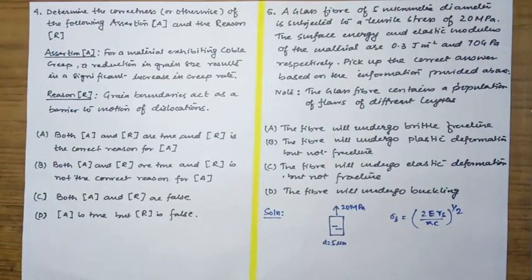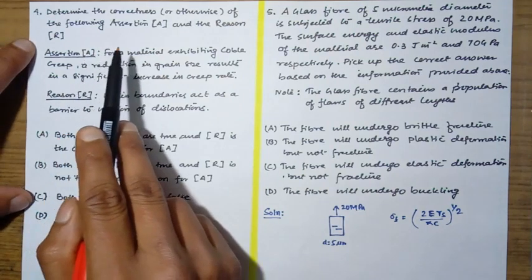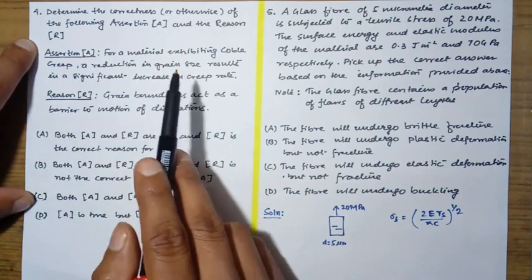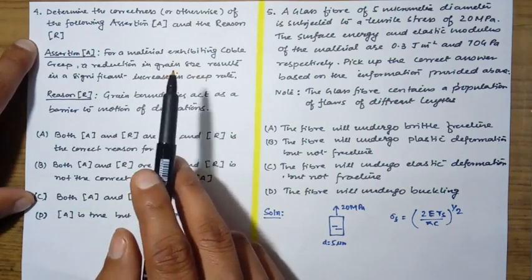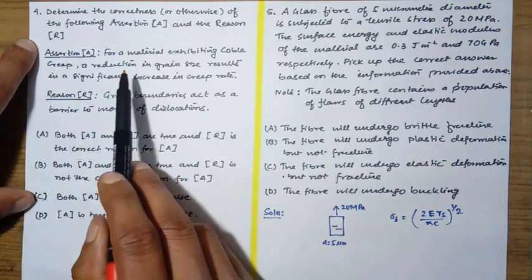Hello everyone, welcome to part 2 of GATE 2018 mechanical metallurgy solution. The fourth question is determine the correctness or otherwise of the following assertion and the reason. So basically it's assertion and reason type of question.